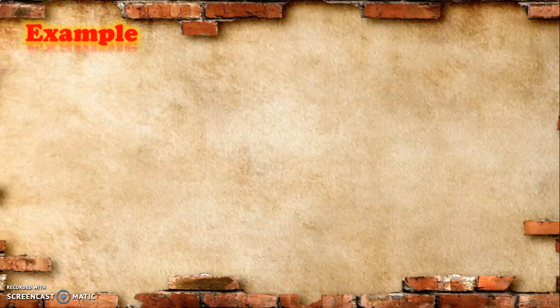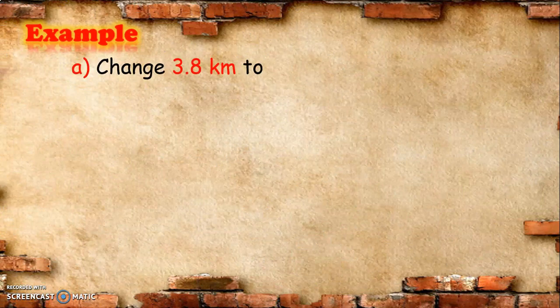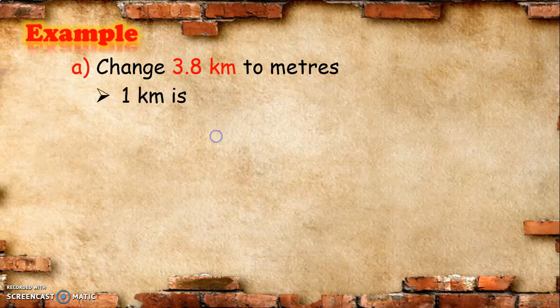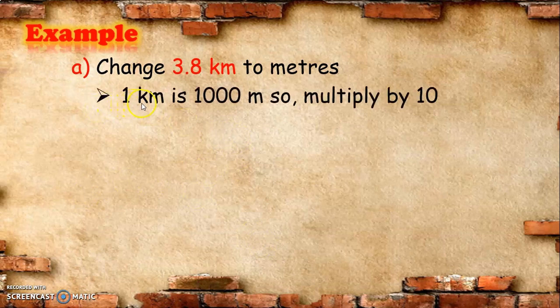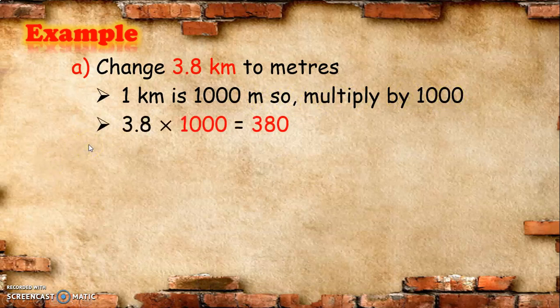Let us have an example. Change 3.8 kilometers to meters. Since 1 kilometer is equal to 1,000 meters, we multiply by 1,000. So, 3.8 multiplied by 1,000 is equal to 3,800 meters.